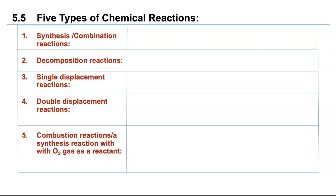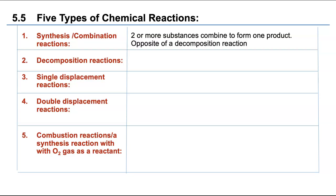Please draw this diagram and have this table in your notes. In synthesis or combination reactions, two or more substances combine to form one product. That doesn't mean all you have is one product — sometimes you have two products. Two or three things make one or two new things. That is called a combination or synthesis reaction. It's the opposite of a decomposition reaction.